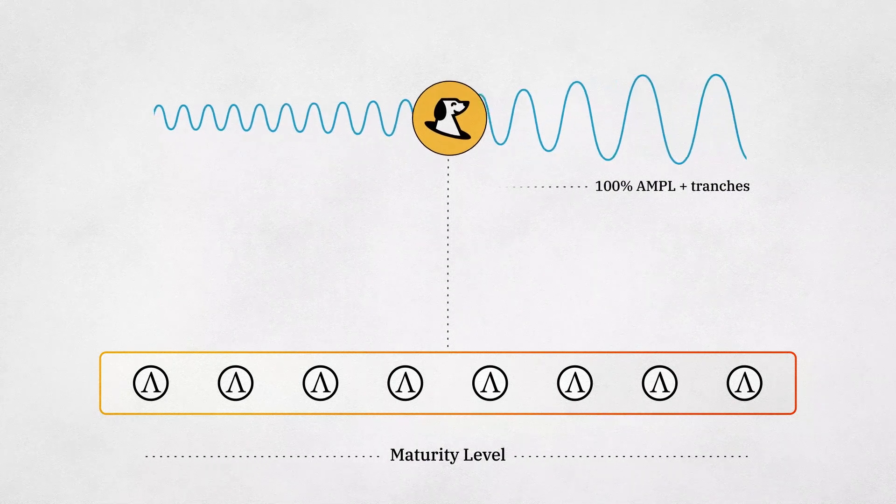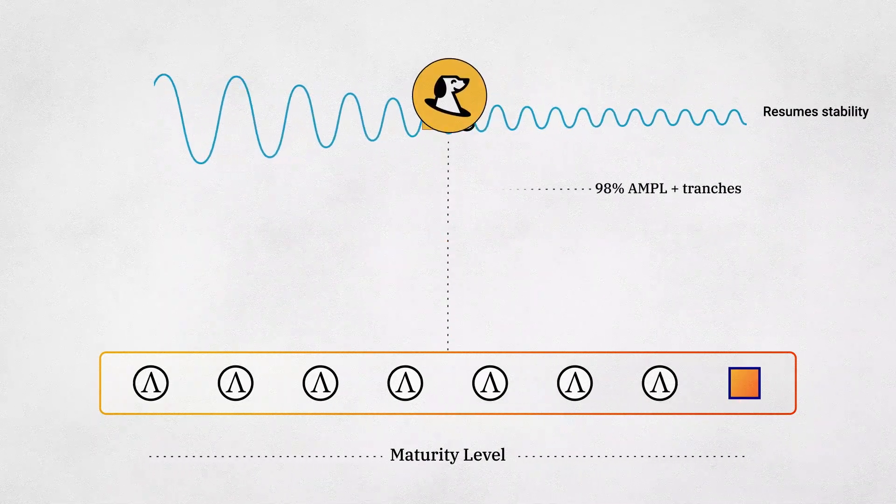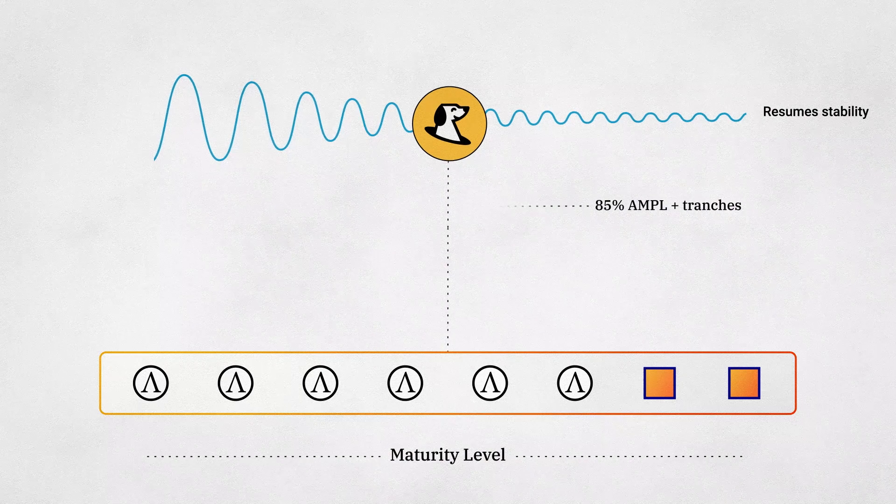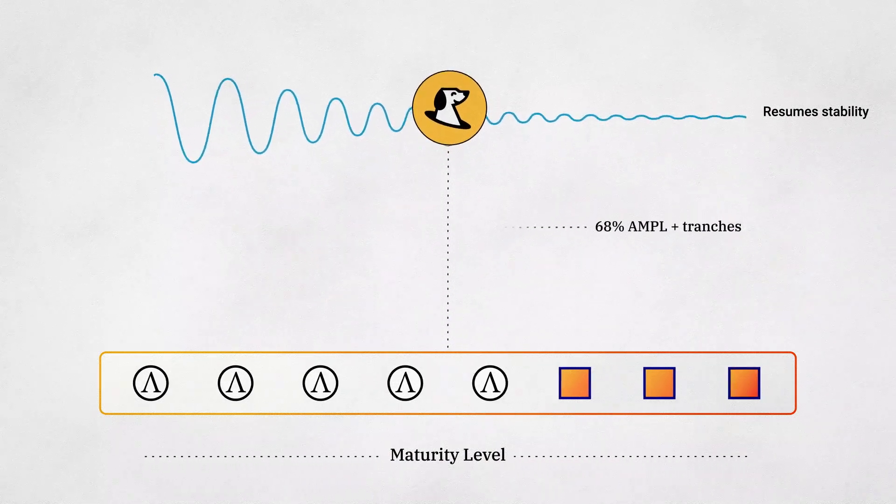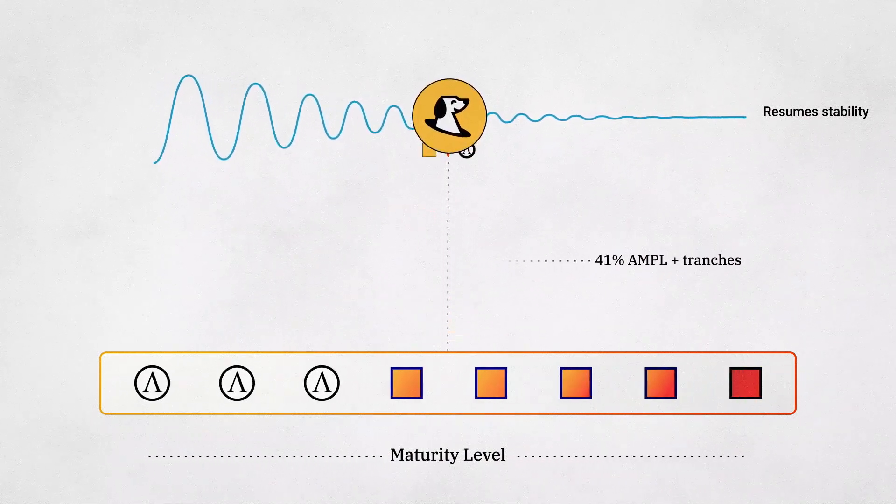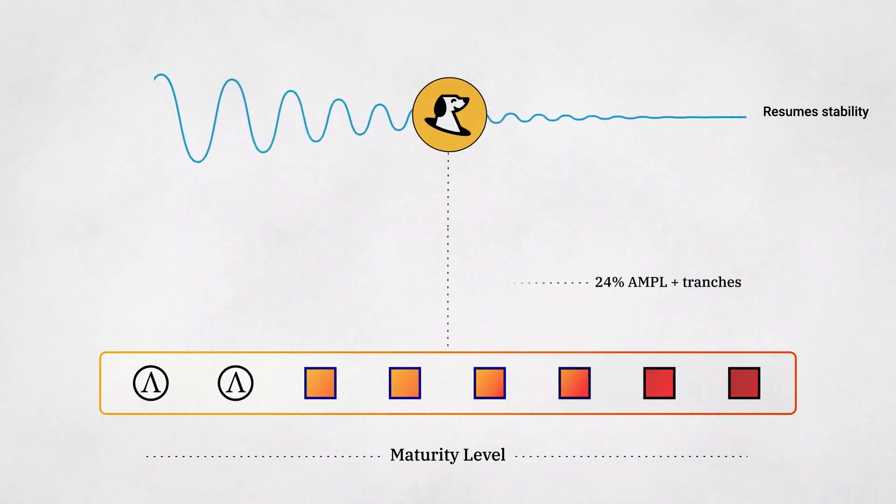Similarly, once the rotations resume, as the raw Ample is replaced with fresh senior Ample tranches, the collateral set progressively becomes fully collateralized by stable assets and gradually resumes stable value storage.